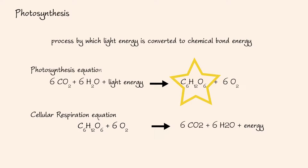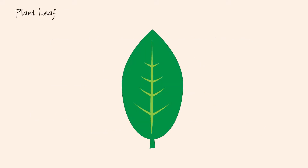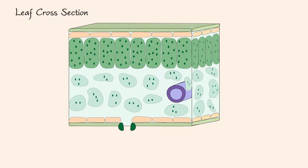We will focus on discussing the details of photosynthesis in this lecture. The plant leaf is the major site of photosynthesis. Let's examine the cross-section anatomy of a plant leaf. The top and bottom surfaces of a plant leaf are covered by a waxy, protective layer known as the cuticle. The main purpose of this layer is to prevent excessive water loss.